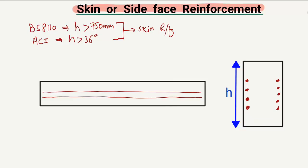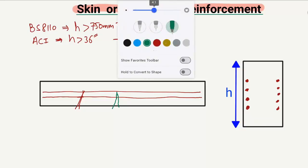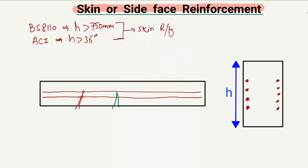These reinforcements are used in order to control the crack width, because during loading the crack width increases. During bending, cracks originate and move from the tension zone toward the compression zone. Because of the greater depth of the beam, we need to close or avoid this higher crack width.